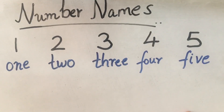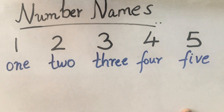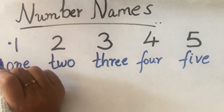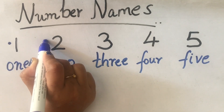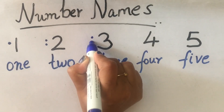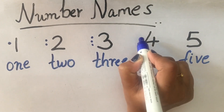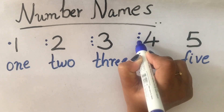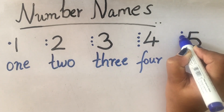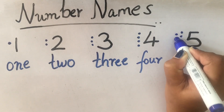Now for telling the number names, you can also use dots or stars to show how to count the numbers. If you have 1, put 1 dot; 2 means 2 dots; 3 requires 3 dots; 4 means 4 dots; and 5 means 5 dots.